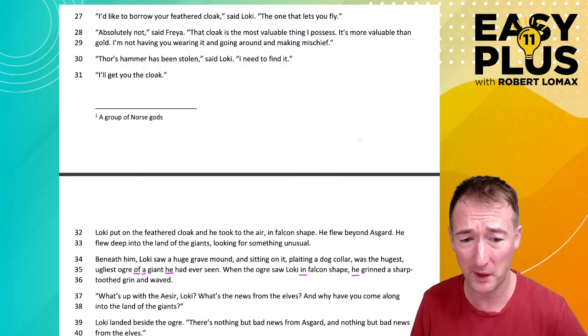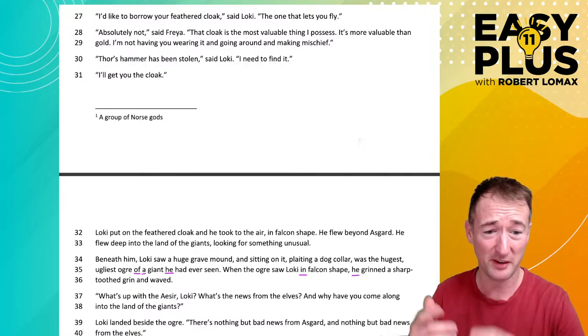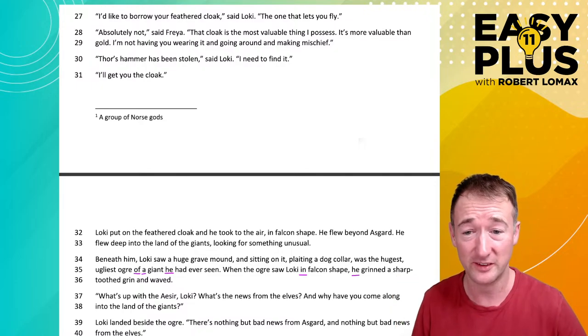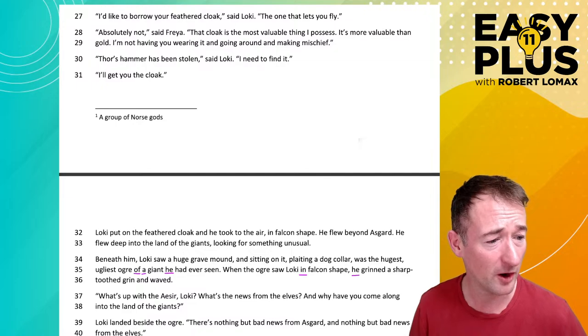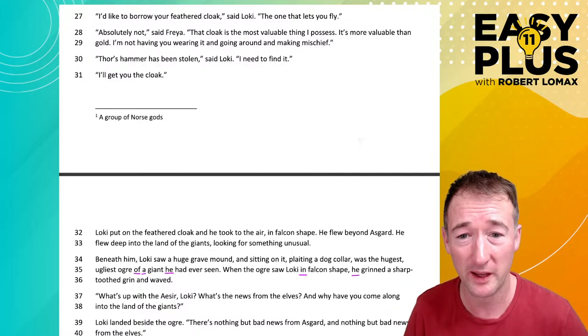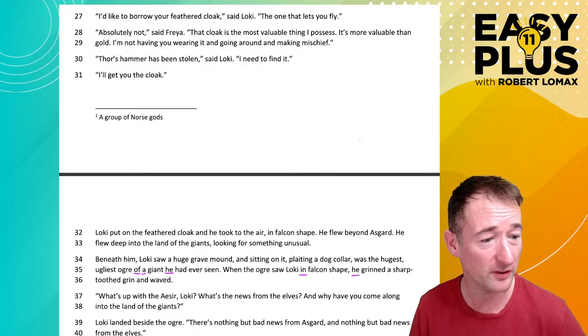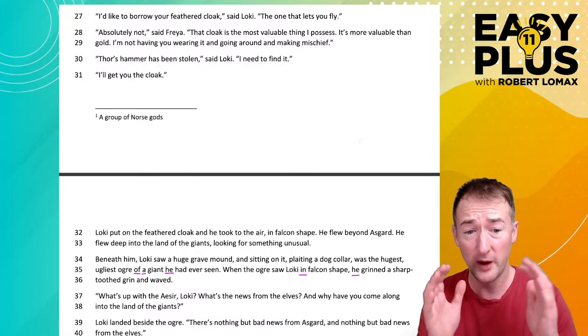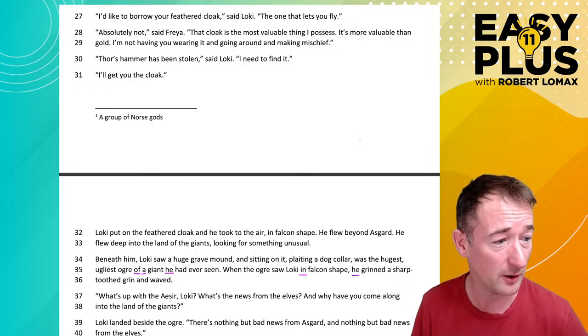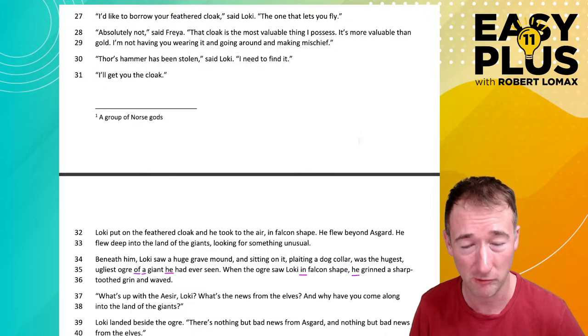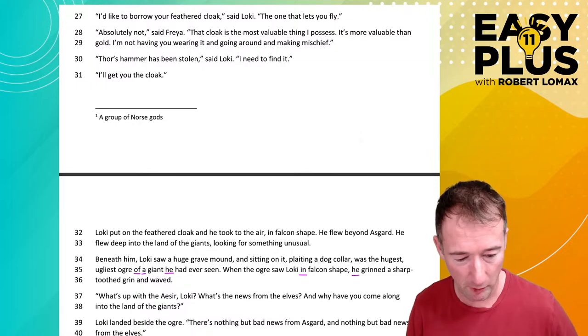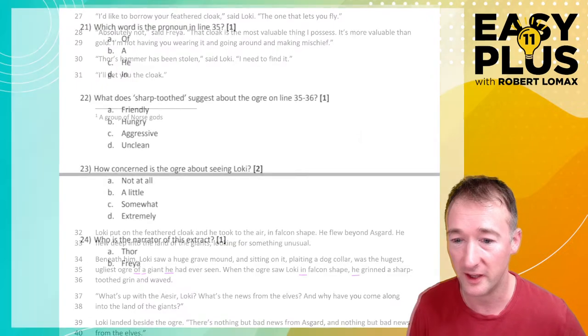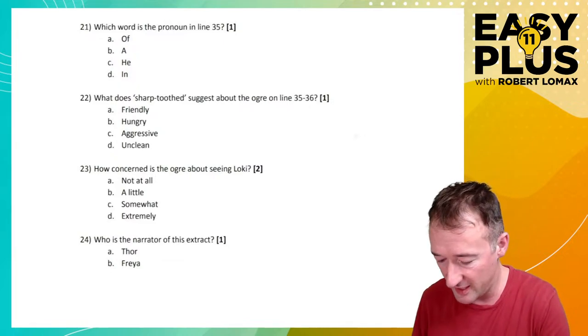Okay. So, it's something that replaces a noun. So, for example, Robert is messing with his software. He is messing with his software. So, of, a, neither of those can be replaced by a proper noun, by a name. You couldn't see the ugliest giant, Robert, Robert, the ugliest ogre, Robert, a giant, the ugliest ogre of Robert, giant. But you could say the ugliest ogre of a giant, Robert, had ever seen. So, he is replacing a noun. In this case, he means Loki, not Robert. Okay. So, a pronoun replaces a noun. He is replacing a noun. And so, the pronoun is definitely he.